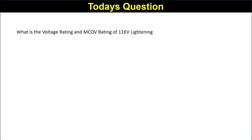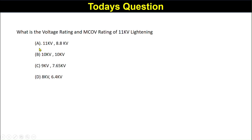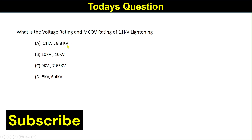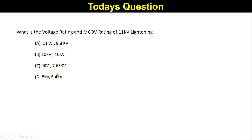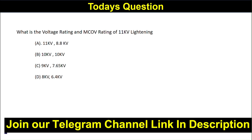Before starting the lecture I want to ask a small question: what is the voltage rating and MCOV rating of an 11 kV lightning arrester? The options are: A) 11 kV and 8.8 kV, B) 10 kV and 10 kV, C) 9 kV and 7.65 kV, and D) 8 kV and 6.4 kV. You can answer in the comment section and I will pin the correct answer.